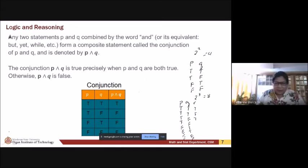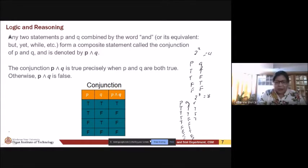So, if you have your conjunction, true and true, you have true, and true will give us true. True and false will give us false. False and true will give us false. False and false will give us false. Meaning to say, pagka conjunction na AND, it will only be true if both are true. Okay? So, any two statements, P and Q combined by the word AND, or its equivalent, sometimes ito yung mga word na ginagamit. But, yet, while. Form a composite statement called your conjunction, P and Q.